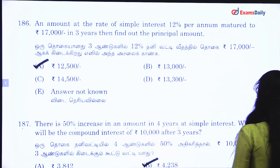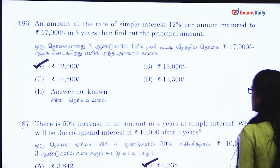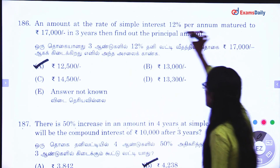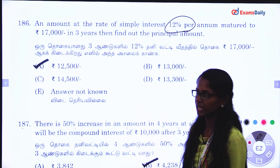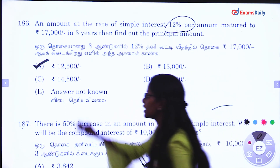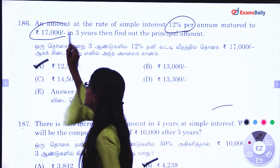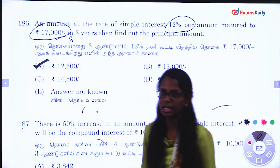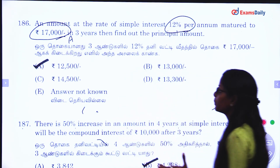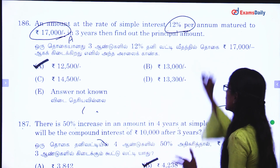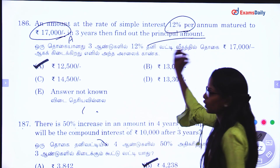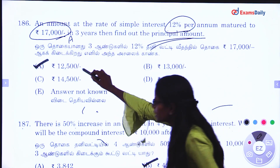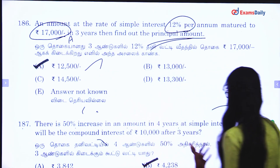Next question — same method. An amount at a rate of simple interest matures to 17,000. Find the principal amount. The answer is 12,500.